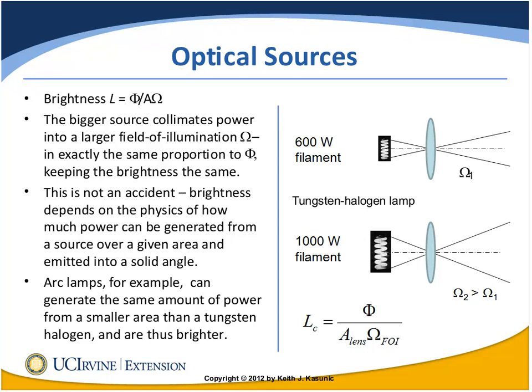The brightness for two different tungsten halogen lamps is the same — that's inherent in the physics of tungsten halogen. If I look at the 600-watt filament versus the 1,000-watt filament directly, I will have exactly the same brightness. That's inherent in how photons are generated from a coiled piece of tungsten. If instead I use an arc lamp, which inherently generates watts from a smaller area, now I have a brighter source — more power from a smaller area.